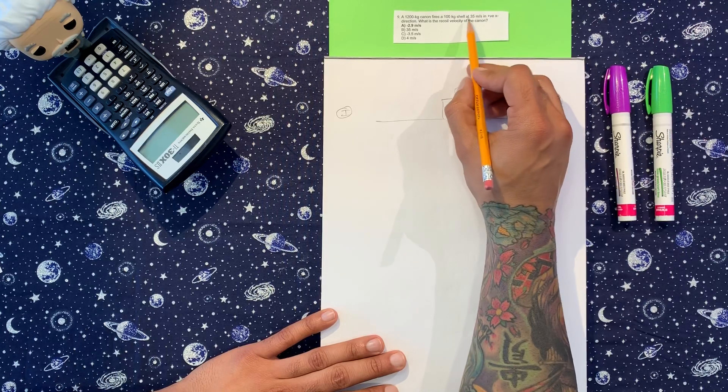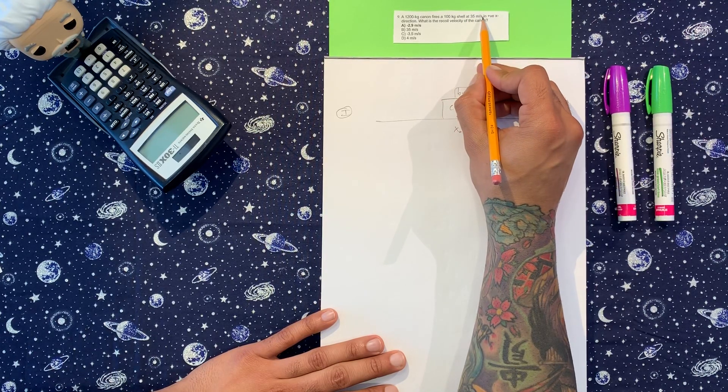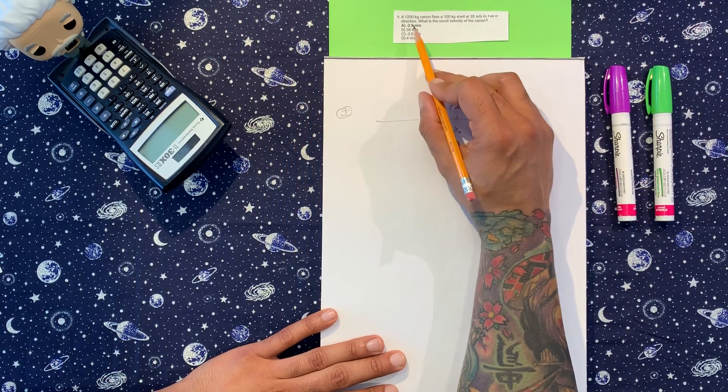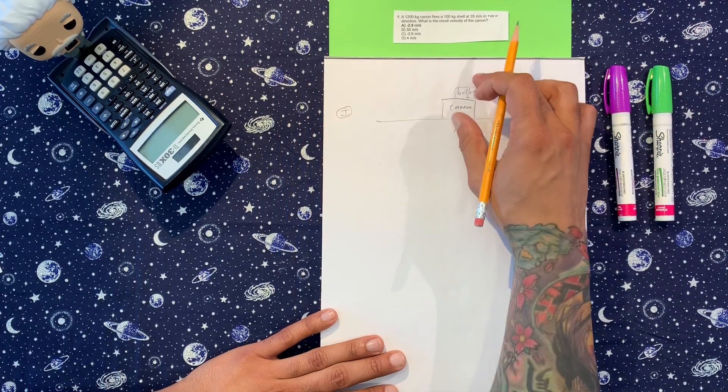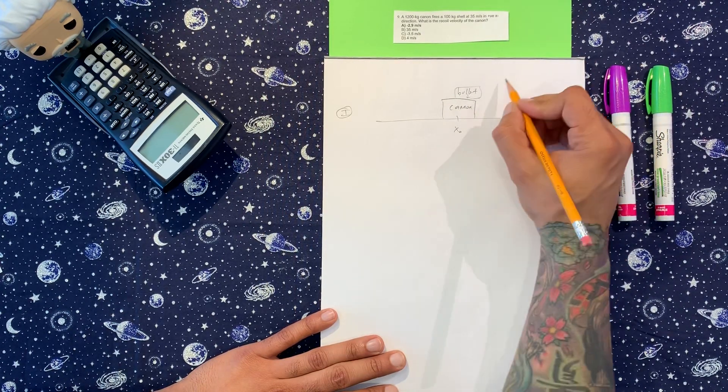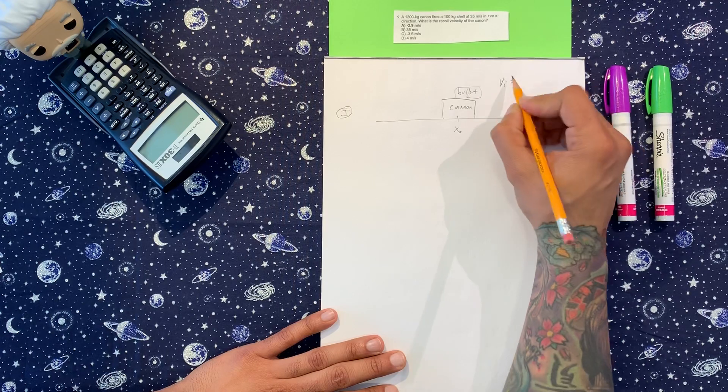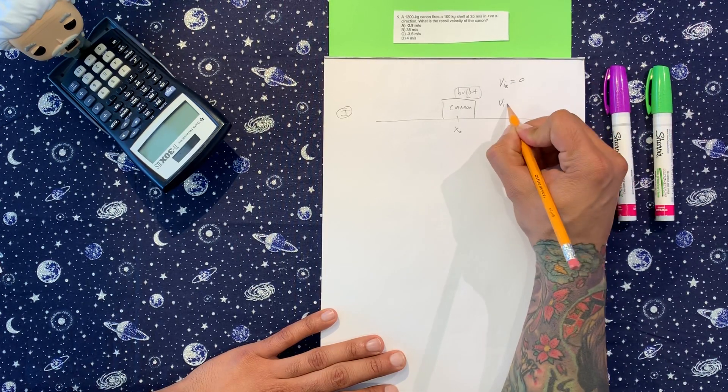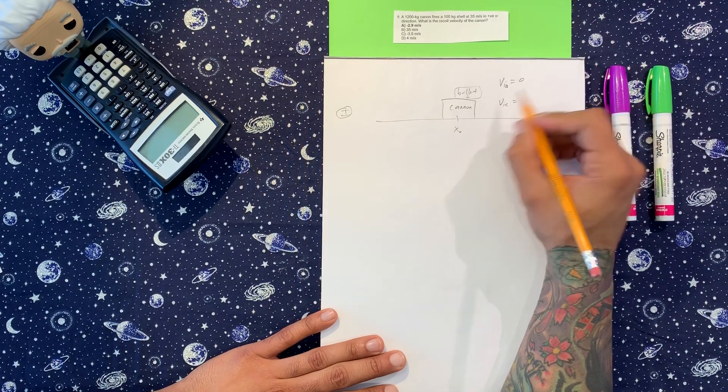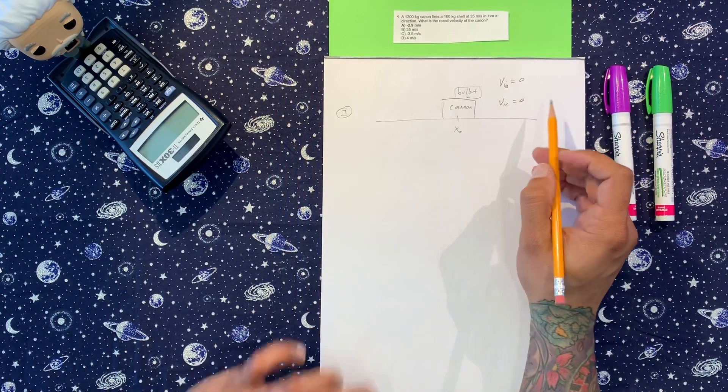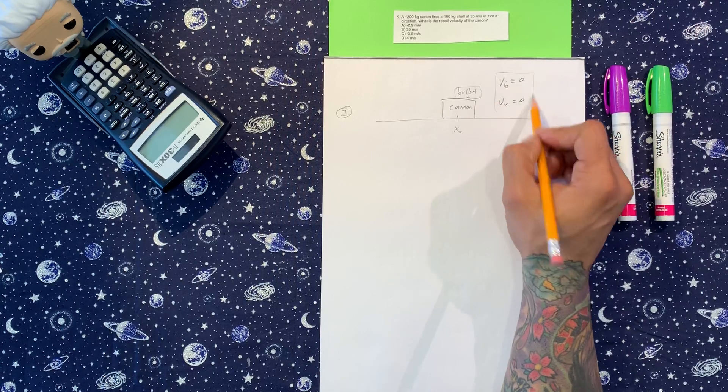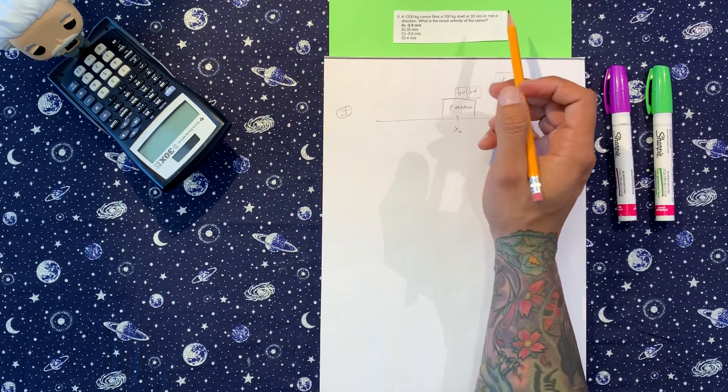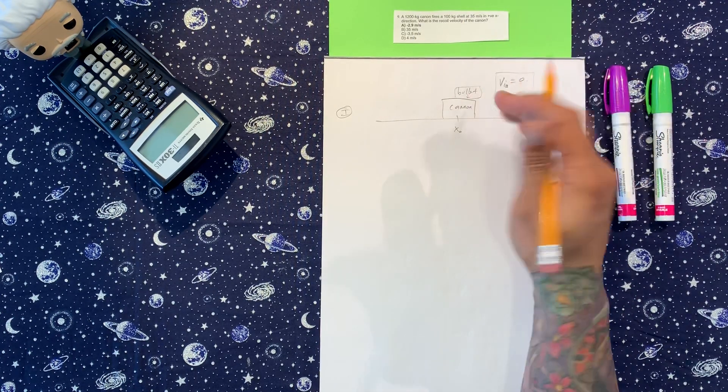Shell at 35 meters per second in the x direction. So initially, this is the picture that we're looking at, right? That means that velocity initially of the bullet is zero, and velocity initial of the cannon is zero. So that's tricky because just by the wording, it doesn't let you know that they started off like this.